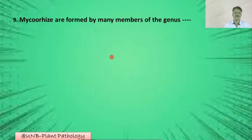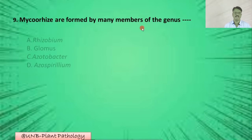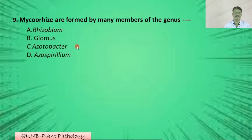Question number nine: Mycorrhizae are formed by many members of the genus — A: Rhizobium; B: Glomus; C: Azotobacter; D: Azotobacter. The correct option is B: Glomus.